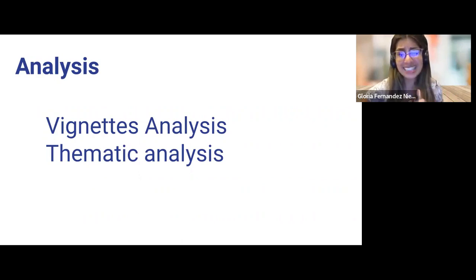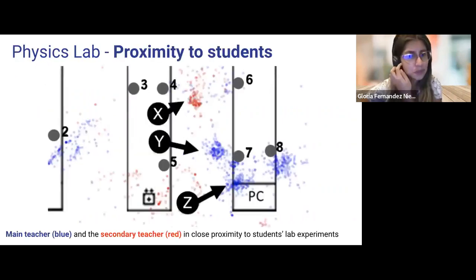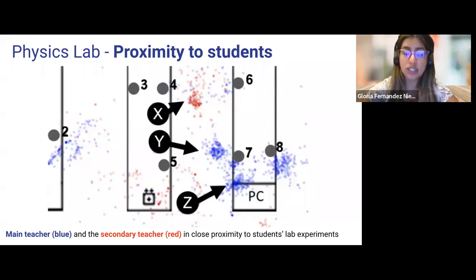Vignettes potentially point to insights and contradictions across teachers inspecting the same visualization. Let's explore two examples. Vignette one is a visualization over 23 minutes of a main teacher and a secondary teacher in close proximity to a student's lab experiments.